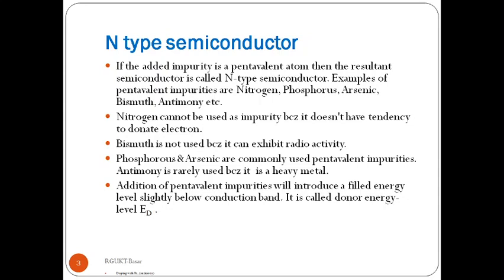Examples of pentavalent impurities are nitrogen, phosphorus, arsenic, antimony, and bismuth. Nitrogen cannot be used as an impurity because it does not have the tendency to donate electrons. Phosphorus and arsenic are commonly used pentavalent impurities. Antimony is rarely used because it is a heavy metal, and bismuth is not used because it can exhibit radioactivity.